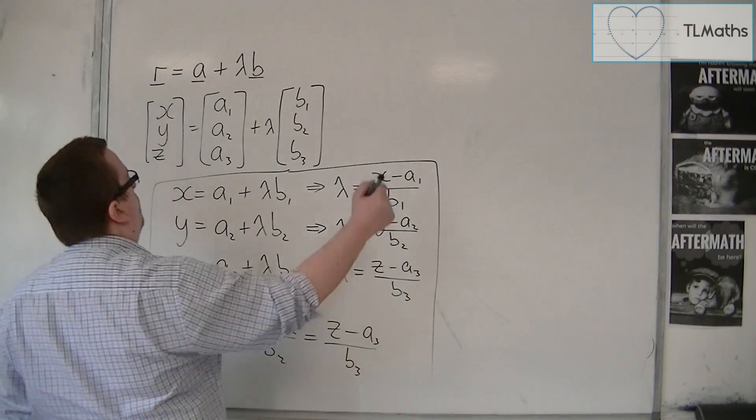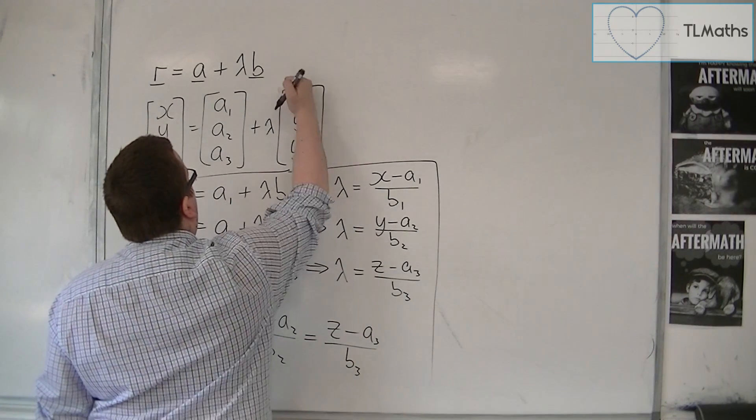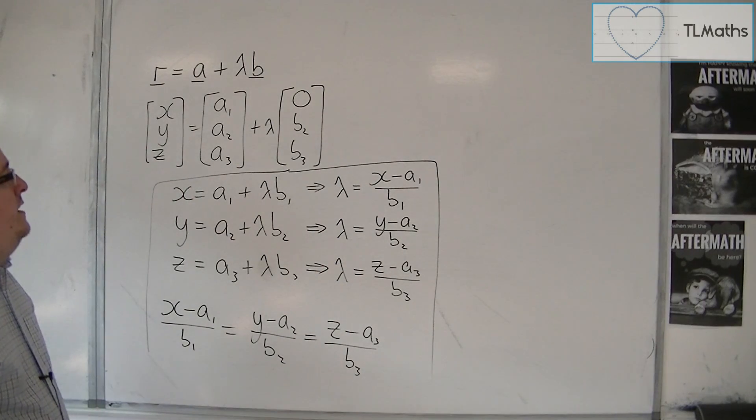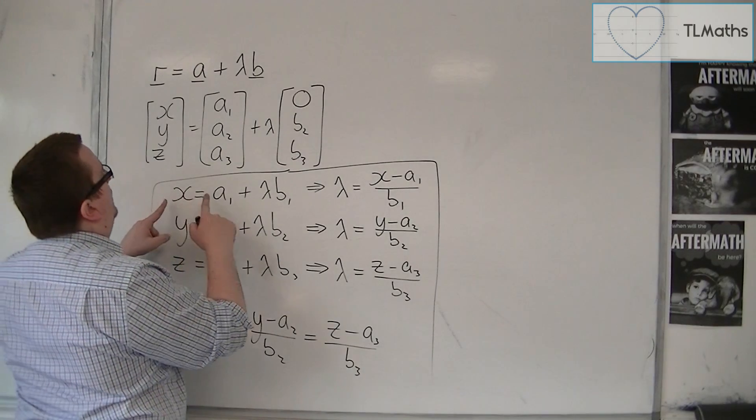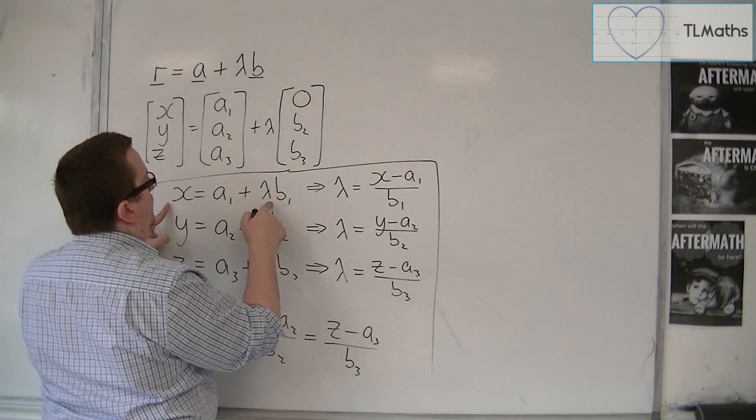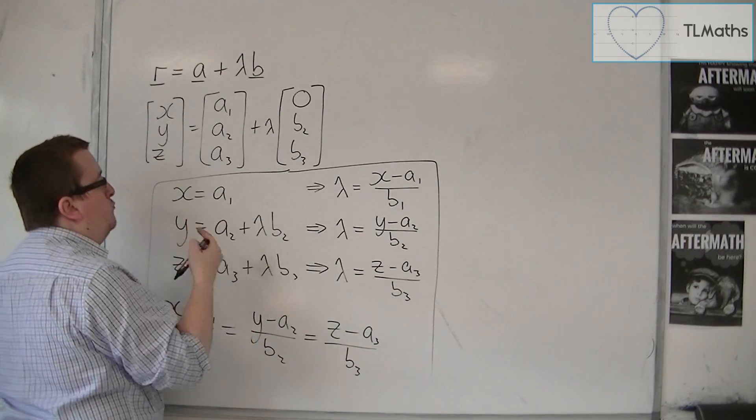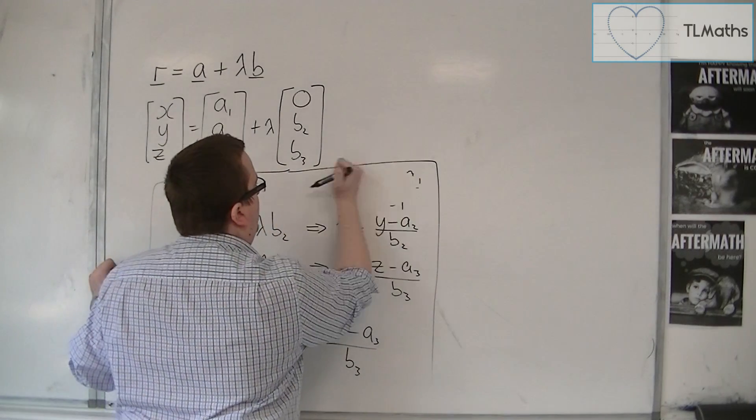If one of them was 0, like that one, then in actual fact, what you would have is you'd have x is equal to a1 plus, well, nothing.